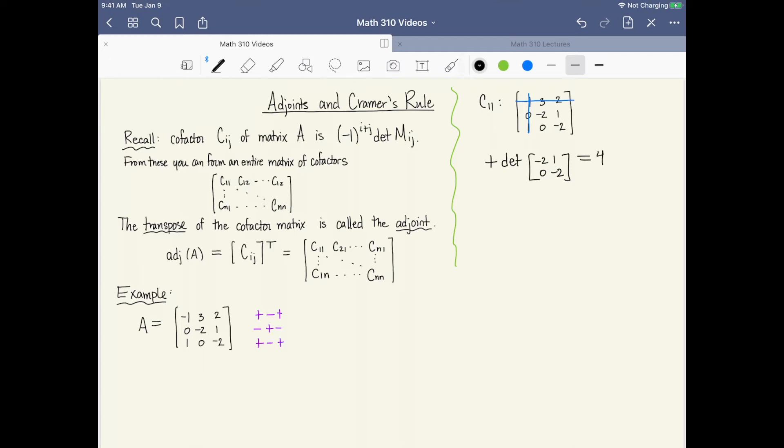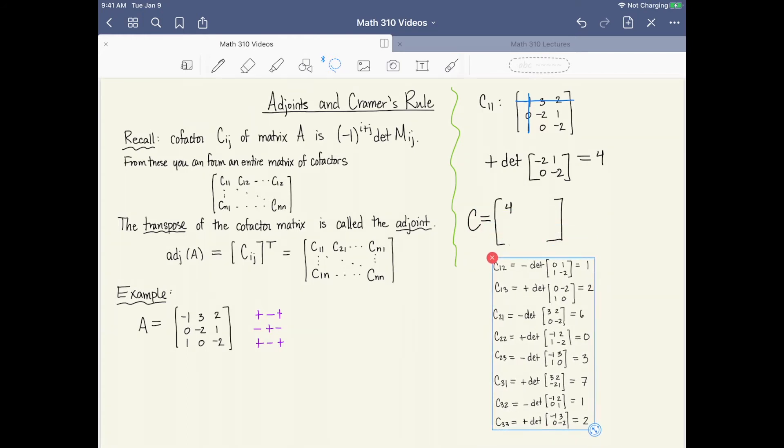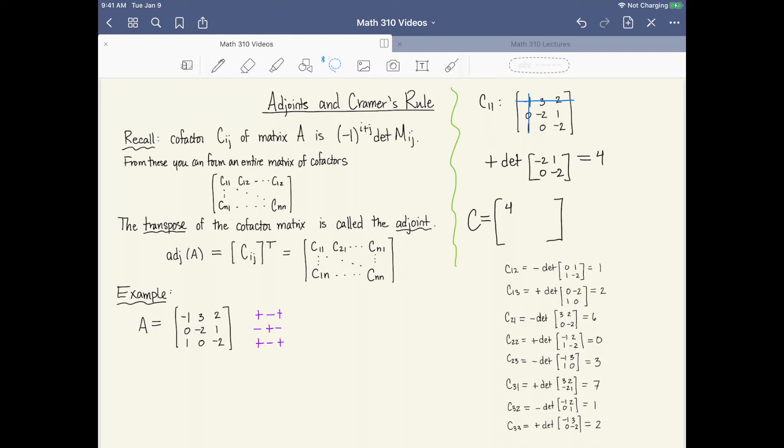So that becomes the first entry of my cofactor matrix. C11 is going to populate a larger matrix with 9 entries, and the first entry in the cofactor matrix C will be 4. If we jot down all of the rest of these, there's 8 more to work out. You get a bunch of numbers for these cofactors, and these are going to go into the different spots in the cofactor matrix. Our cofactor matrix is then C: 4, 12, 6, 0, 3, 7, 12, using all of these numbers. And then we flip the rows to the columns and the columns to the rows to take its transpose, and that gives us the adjoint of A.